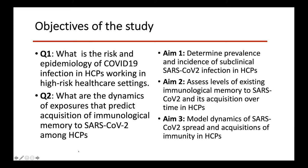Aim one: we're going to determine the prevalence and incidence of subclinical SARS-CoV-2 infection in healthcare providers. Aim two: we will assess the level of pre-existing immunological memory to SARS-CoV-2 as well as its acquisition over time. I'll go into more details in the next slide.